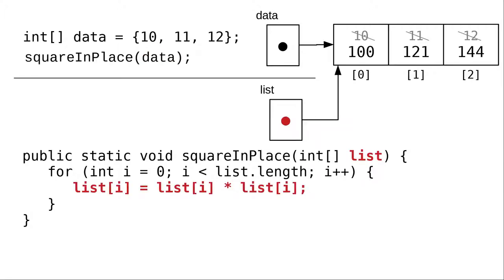The loop then changes the array referenced by the list parameter. And when the call finishes, data, which refers to the same area of memory, will have been changed in place.